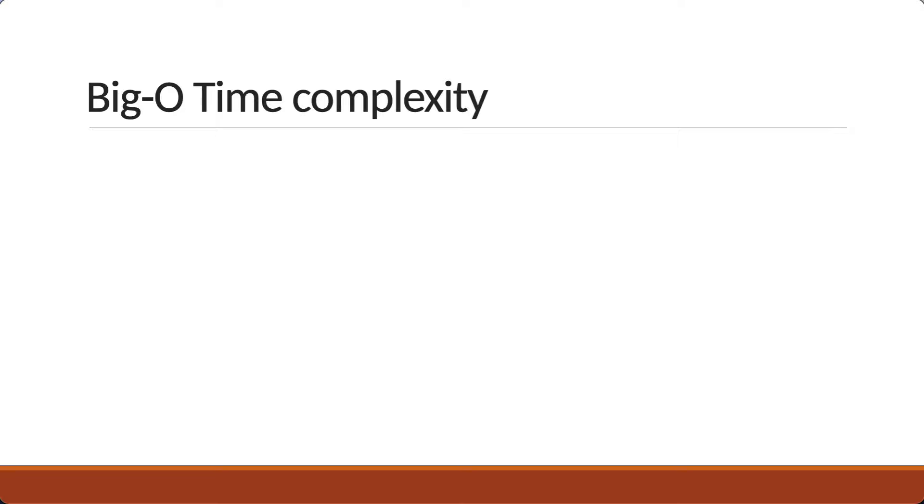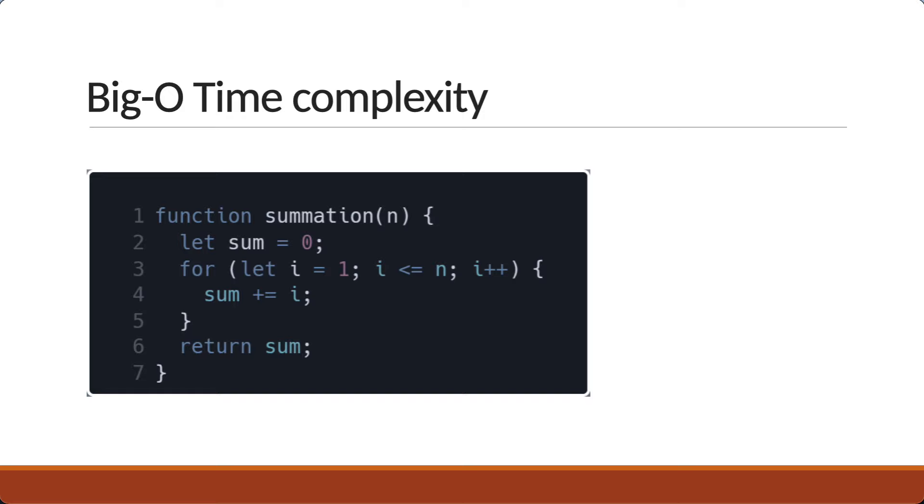Alright, let's calculate the worst case time complexity of our first program. I say program because the algorithm has already been implemented with JavaScript as the language. The algorithm is to find the sum of first n natural numbers. We have an input n and the function returns the sum of all the natural numbers from 1 to n. For example, summation when called with n equals 4 will return 10.